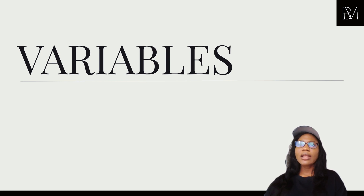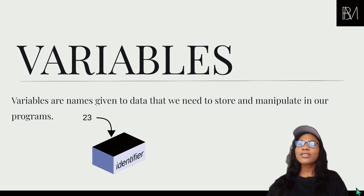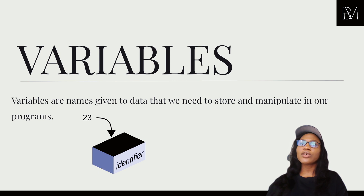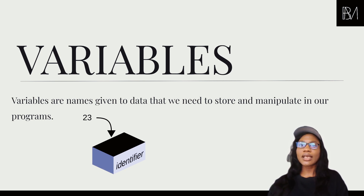Today we're going to be learning about something called variables. You're probably wondering how this relates to objects and object-oriented programming. Variables are names given to data that we need to store and manipulate in our programs. You can think of a variable like a container — if you need to store a piece of data in your program, you put it inside a container.